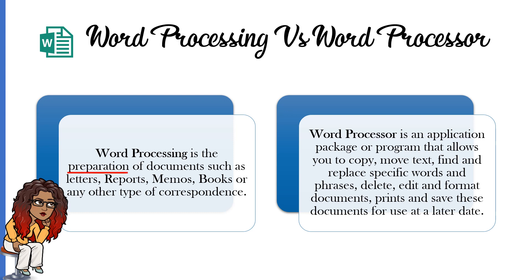The important words to keep in mind are: Word Processing refers to the preparation or action of making your document, whereas Word Processor is the application package or software that you use to create your document. So, Word Processing is the action, whereas Word Processor is the software. Your Word Processor allows you to perform Word Processing, and for our lessons, the Word Processor we'll be using is Microsoft Word.